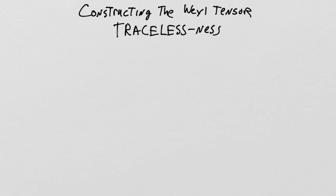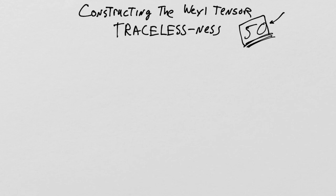All right, let's begin lesson 50. Wow, 50 lessons. This basically means if I'm going at about an hour per lesson, this has been a 50-hour course, which is way longer than any normal course would possibly be. So those of you who are learning general relativity through my coursework are doing so in a particularly inefficient way, I've got to say.